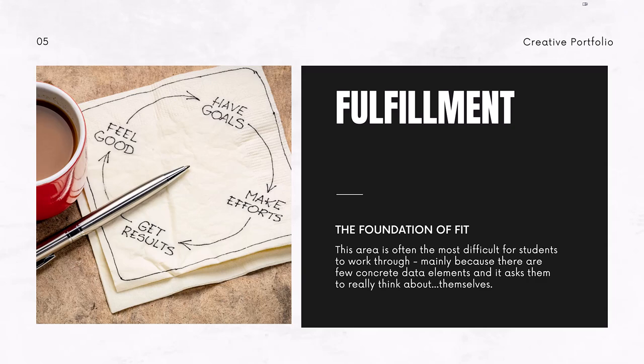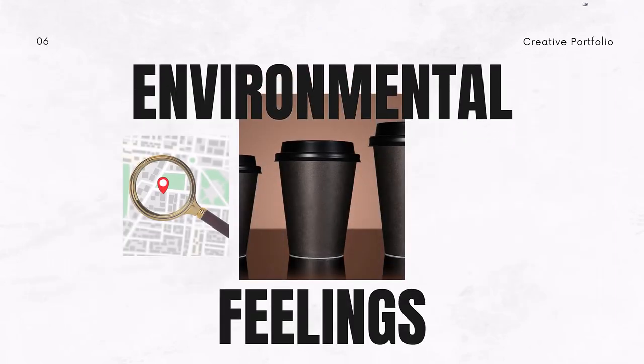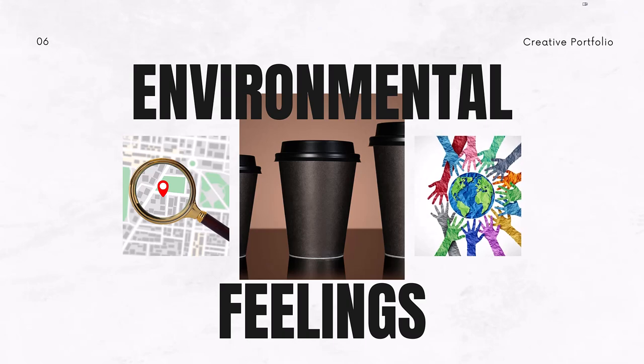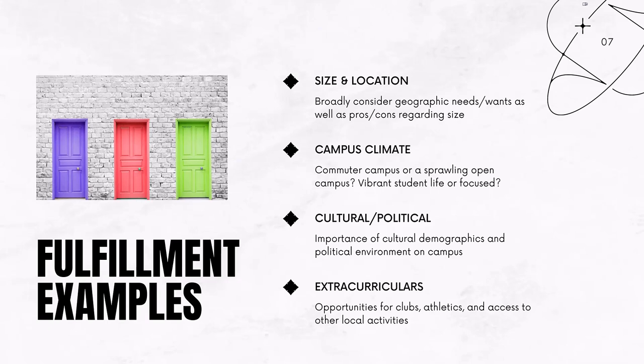It's really challenging but really important, because we can find a great academic fit and a great financial fit, but if we don't find fulfillment in the place where we're going to spend the next three, four, five, or even seven years, you might find yourself struggling and not able to thrive. Fulfillment is often related to environmental factors and feelings — things like size and location, broadly considering geographic needs and wants, and the pros and cons of different campus sizes.